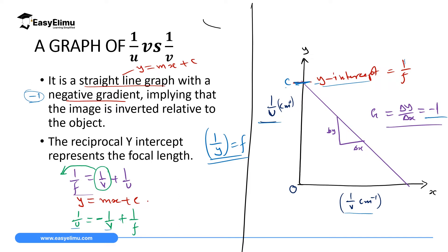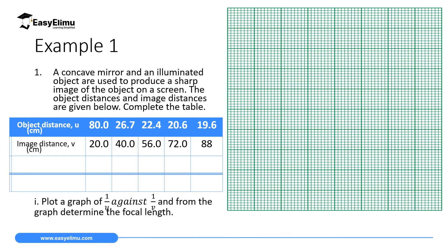Now we will draw a graph to find the focal length of a mirror. The question: a concave mirror and an illuminated object are used to produce a sharp image on a screen. The object distance u and image distance v are given. Complete the table and plot a graph of 1 over u against 1 over v, then from the graph determine the focal length of the mirror. We need to find 1 over u per centimeter and 1 over v per centimeter.